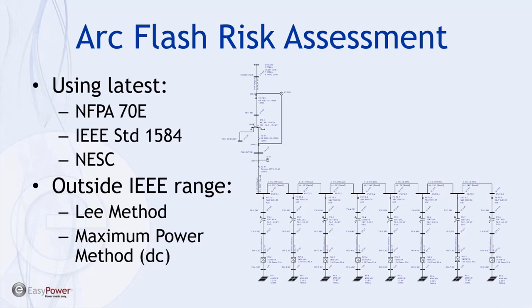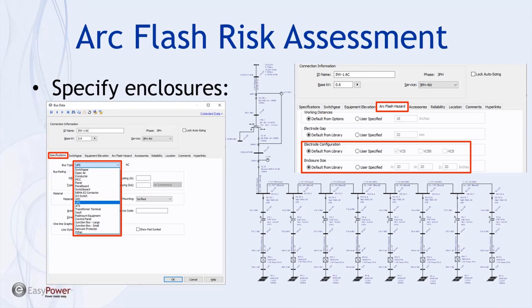For this presentation, we'll focus primarily on the IEEE standard 1584 method. The IEEE 1584 method is valid for three-phase AC enclosures between 208 V and 15 kV. When the voltage range is exceeded on the high end, the program will use the Lee method. IEEE 1584 does not cover DC enclosures at this time, so EasyPower uses the maximum power method for DC enclosures. For each new module, new data entry is required — the first thing to select for each enclosure is the bus type, and EasyPower provides a drop-down list of many common enclosure types.